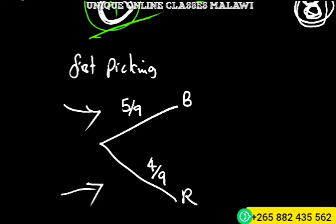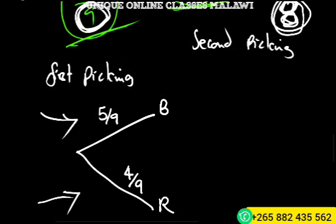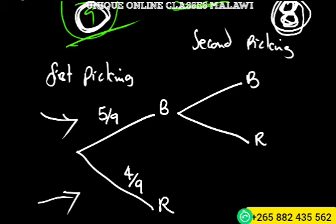Now we have the second picking. For each branch, we have blue and red again. If we picked blue first and pick blue again, there would be only four blue sweets remaining, so the probability is 4 over 8. If we picked blue first then red, we still have four red sweets, so it's 4 over 8.